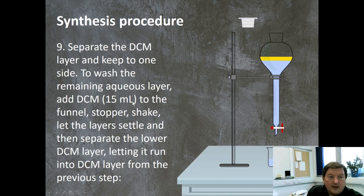We can put a funnel on the top. We're going to stopper this, give it a shake. And we're going to let the layers settle again and then separate the lower dichloromethane layer. Again, DCM is at the bottom because it's still more dense than the aqueous layer.